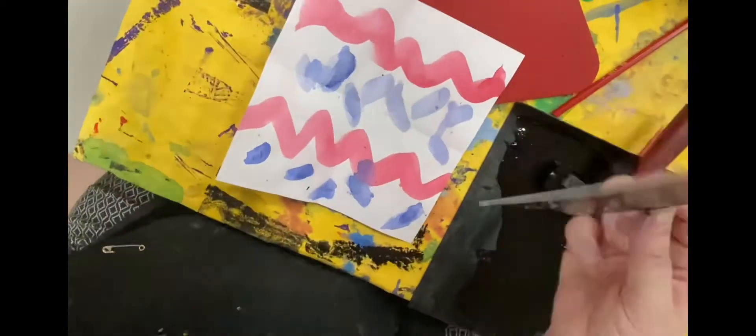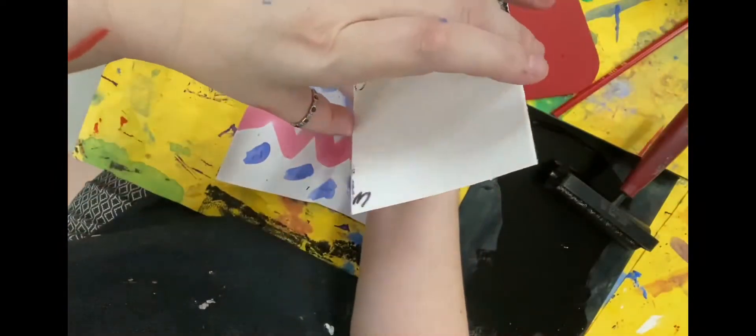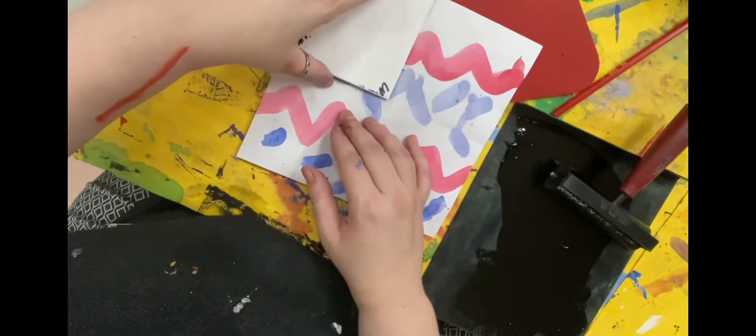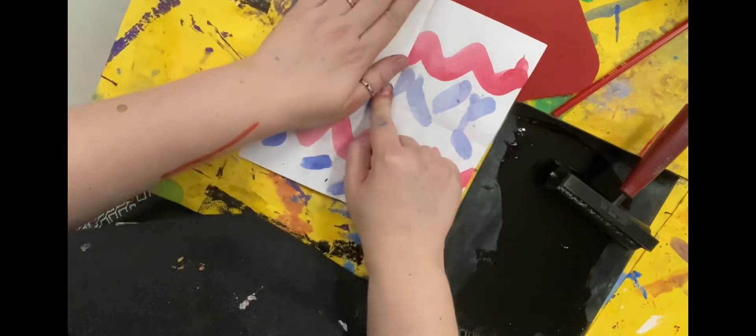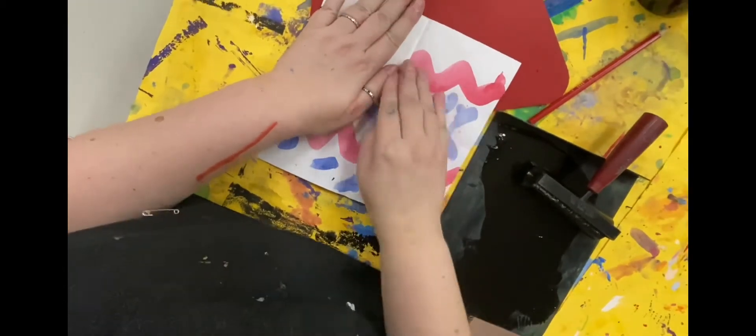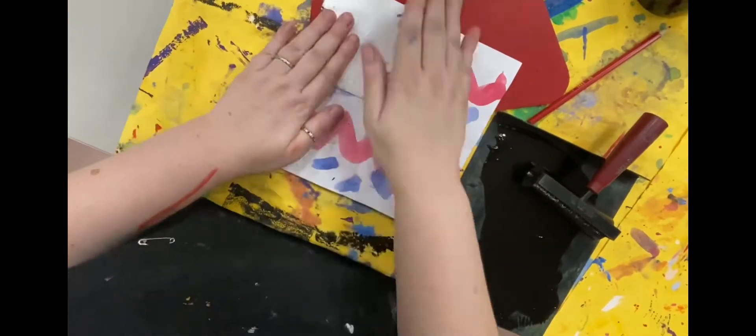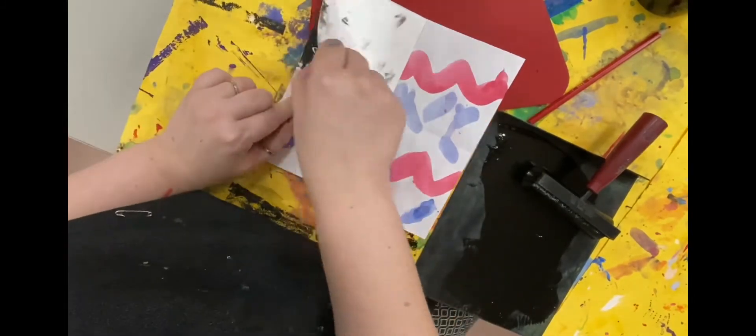Now you're going to line up the letter M that you put in the corner of your styrofoam with the middle of the paper and press down evenly. You can also use a clean brayer to add even pressure.